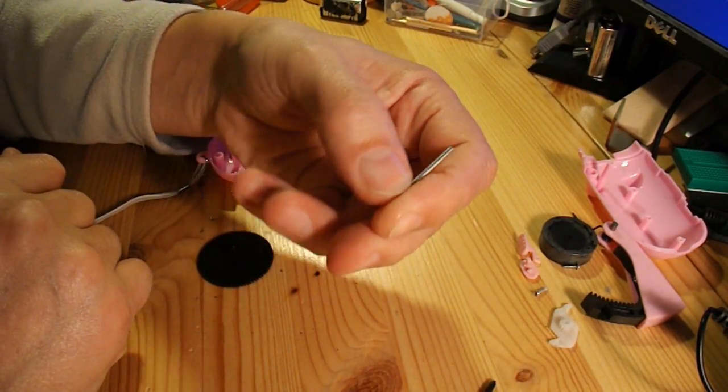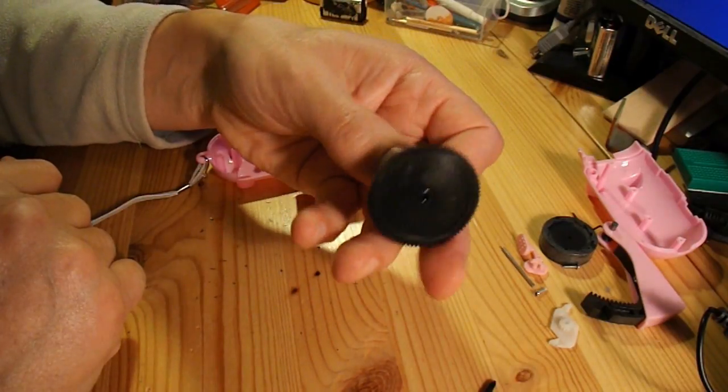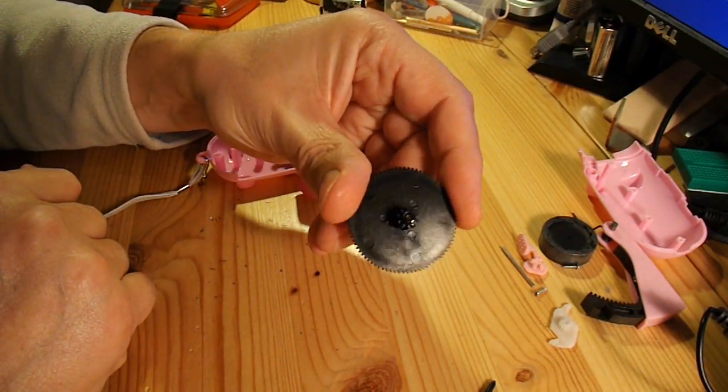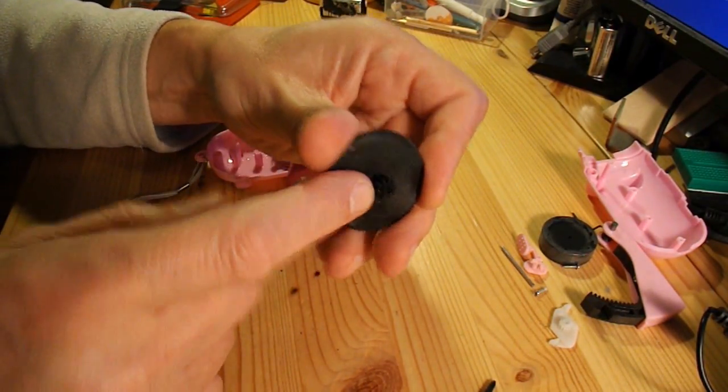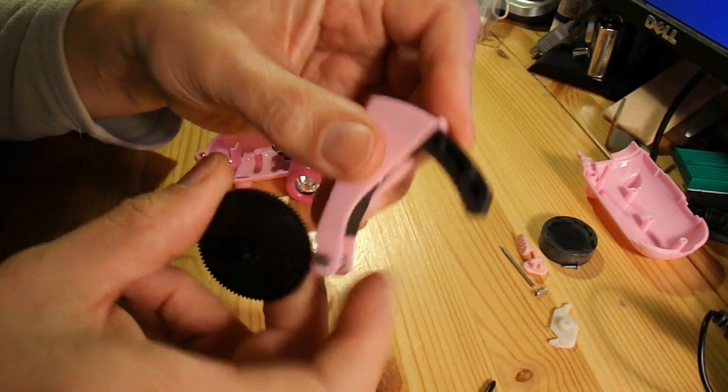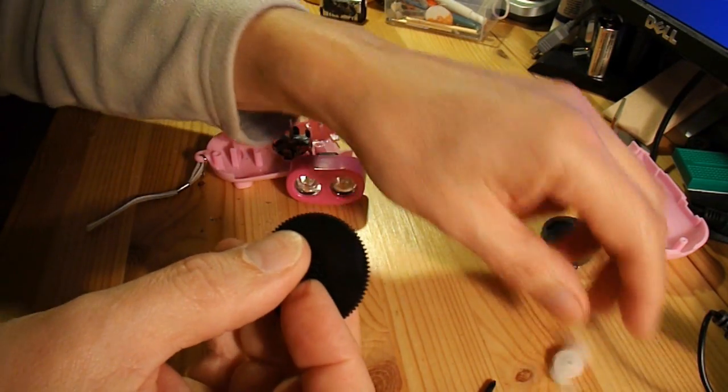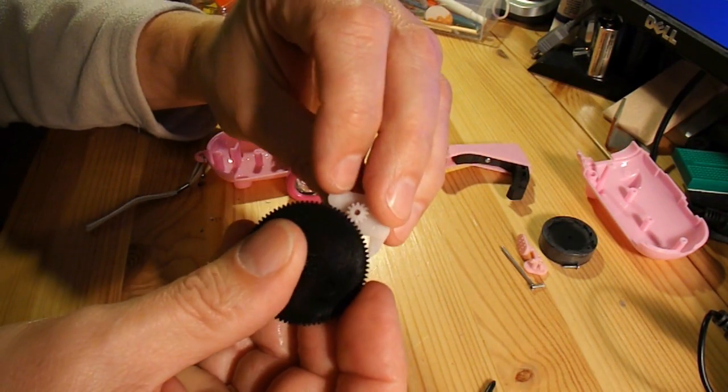A little metal axle potentially. Another nice gear wheel. Those teeth obviously match those teeth. And those teeth match those teeth.